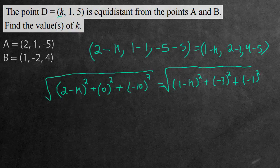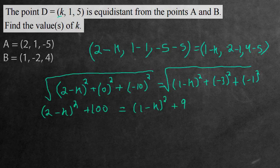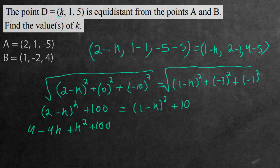We're going to square both sides. We're going to have 2 minus K squared plus 100 equal to 1 subtract K squared plus 10. Now let's multiply this binomial out. It's going to be 4 subtract 4K plus K squared plus 100, equal to 1 subtract 2K plus K squared plus 10.